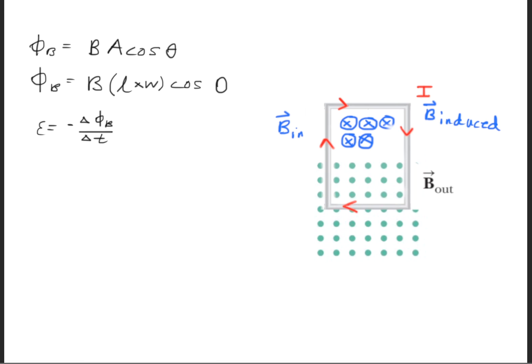Now we'll bring up Faraday's law: the induced EMF is equal to the change in flux. The negative sign simply represents Lenz's law. We won't focus on the negative sign for this question, and instead look at the other variables causing a change in flux. The magnetic field and the width are not going to change. What is changing, however, is the length.